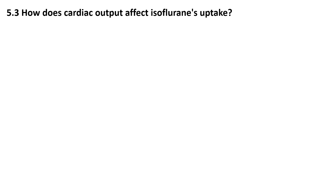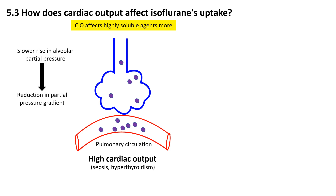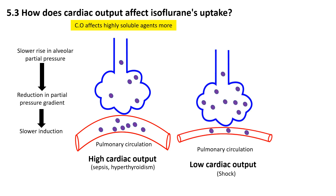How does cardiac output affect isoflurane induction? The effect of cardiac output on induction is more pronounced with more soluble anesthetic agents, as their uptake is greater. In high output states, increased pulmonary blood flow physically clears anesthetic molecules from alveoli faster than they can be replenished by ventilation, slowing the rate at which the alveolar partial pressure rises. Since alveolar partial pressure is the driving force for diffusion of anesthetic molecules into the blood and brain, increased cardiac output slows down induction speed. Conversely, a lower cardiac output means less blood flow, allowing the anesthetic to build up in the alveoli, leading to a faster rise in alveolar partial pressure and a quicker onset of anesthesia.